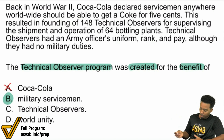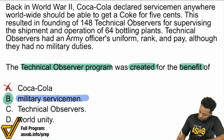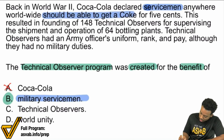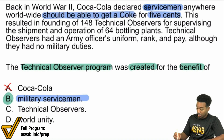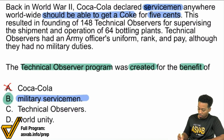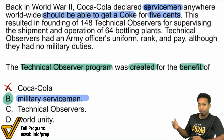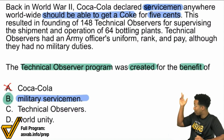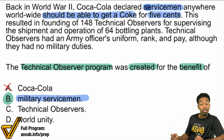B, military servicemen — right here, they declared servicemen should be able to get a Coke for five cents, and they did. This resulted in the founding of the Technical Observer Program, making all these bottling plants, and they kept describing some other things. But yeah, the servicemen were the ones who definitely benefited, according to the passage.